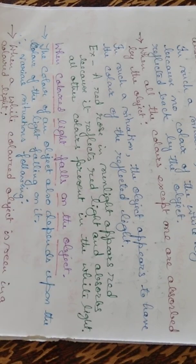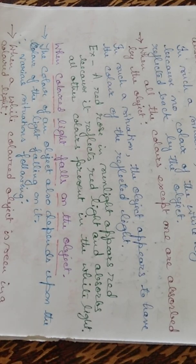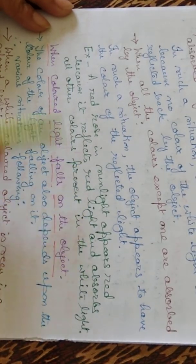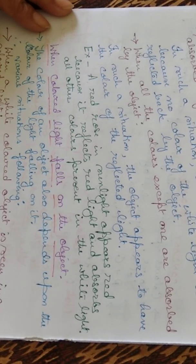When all the colors except one are absorbed by the object, the object appears to have the color of the reflected light. For example, a red rose appears red because it reflects red light and absorbs all the other colors present in white light.